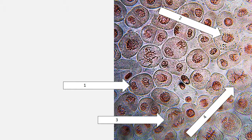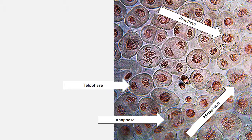You can test yourself on this diagram and see if you know what each stage looks like. When you click the next slide, the answers are revealed. We have prophase in the top right corner, then metaphase — you can see the chromosomes lining up in the middle. Third is anaphase — you can see them really starting to separate from each other. And telophase is last — you can even start to see the line where they are starting to divide.